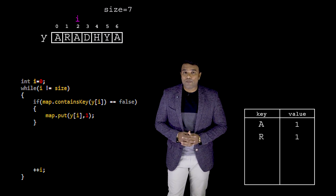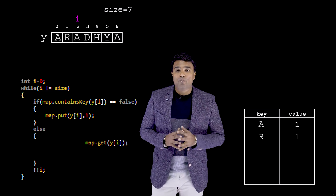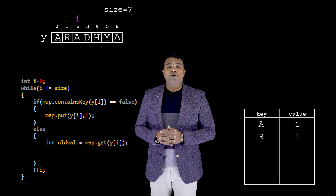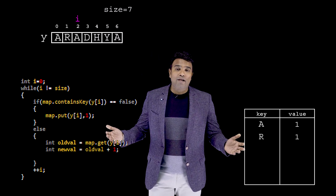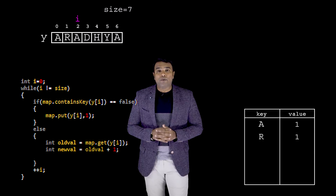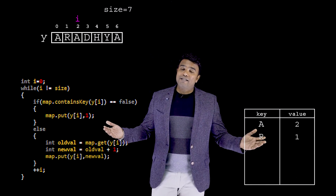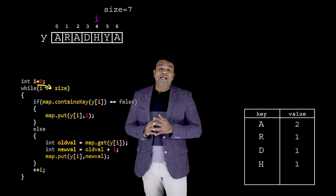Since the key is already present, I enter the else block. First I get the value associated with 'a' — which is '1' — and place it inside a variable called 'old_val'. Then I compute the new value as old_val plus one, giving two. Then I put back 'y[i]' along with the new value using the put method, and the map is updated. After incrementing i, I proceed through the entire array until all data gets placed into the map.